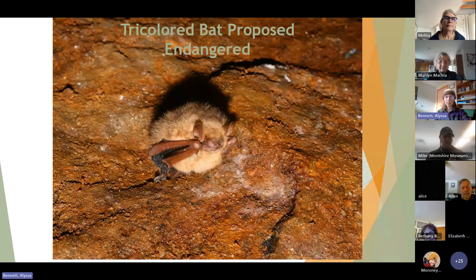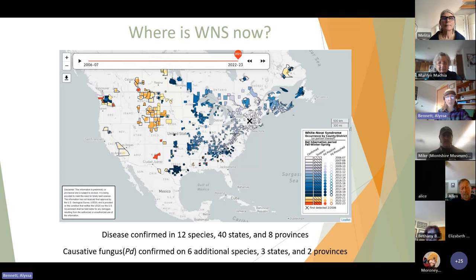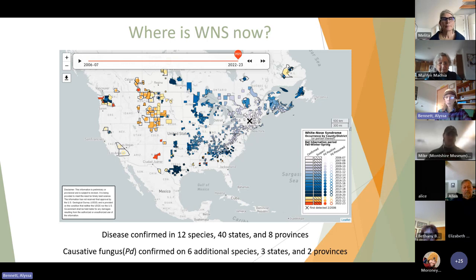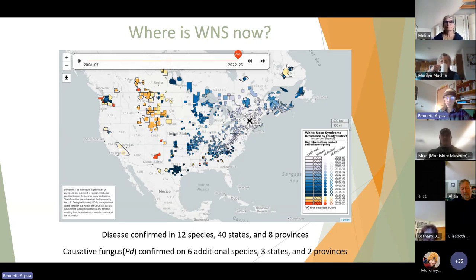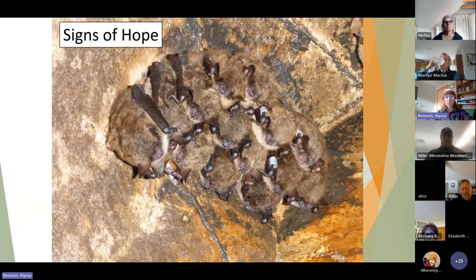The tri-colored bat is rarely found in Vermont in summer — we see just a couple at underground sites, where we've been focusing our protection efforts. The disease first appeared in New York State and spread along the Appalachian Mountains, into Canada, and more recently across the West. It's now confirmed in 12 different bat species in 40 states and 8 Canadian provinces, with additional species and states where the fungus has been found but the disease itself not yet fully confirmed.